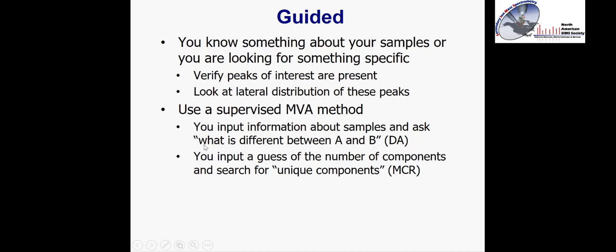With discriminant analysis, we ask what's different between sample A and B — we're actually telling the algorithm which sample is which, and it tries to maximize or find the maximum differences between those samples. MCR is what I call a guided multivariate analysis method because you have to give it some initial guess about how many components you have and some information about the samples for it to come up with a solution.